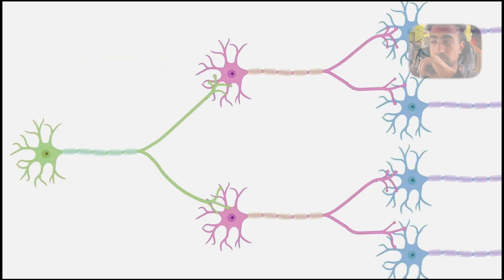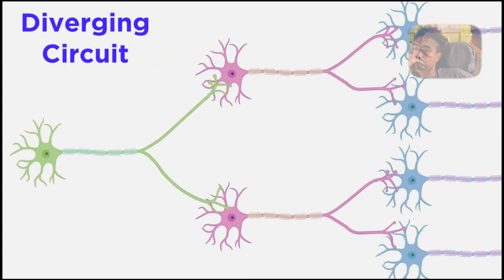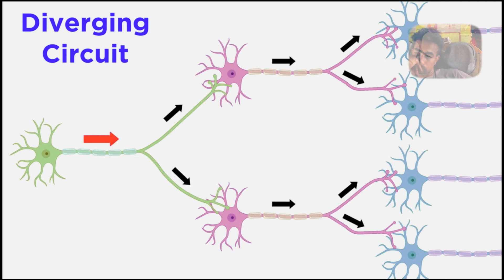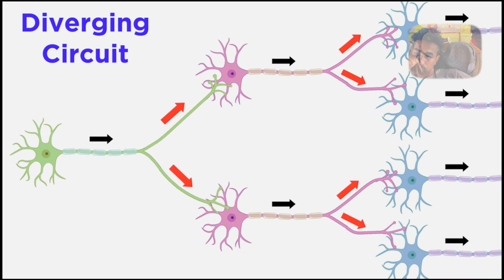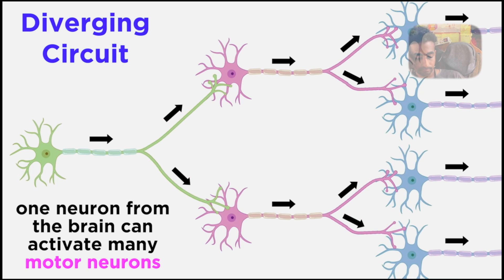Let's look at the types of circuits. First, here we see a diverging circuit — one input and many outputs, as the signal is amplified with each transmission. A single neuron in the brain can activate a huge number of motor neurons in this manner.